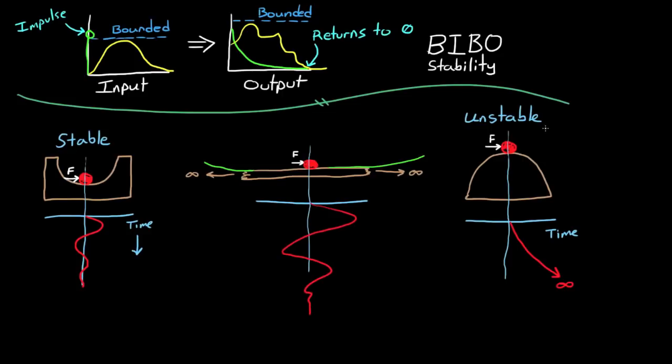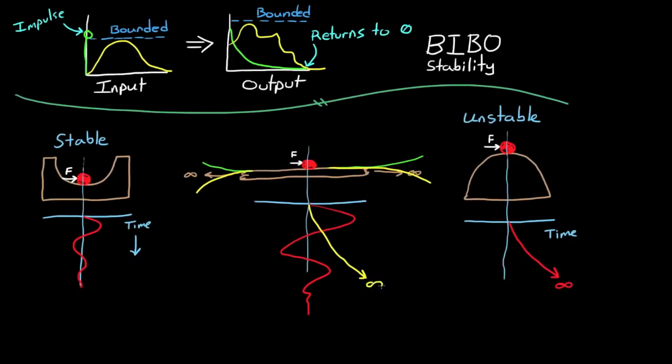If the table ever so slightly slopes down, then when the ball is disturbed, it will continue off into infinity, and this is an unstable system.